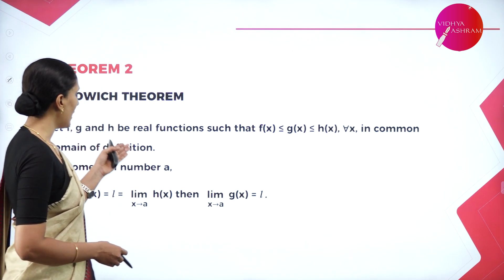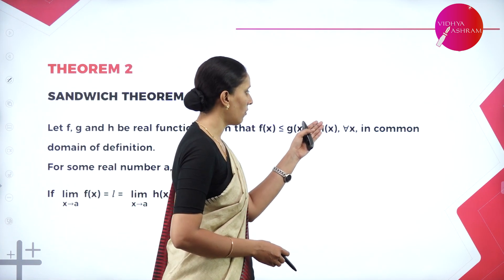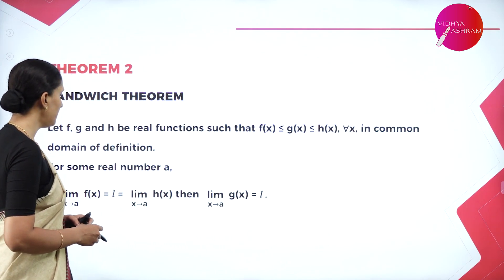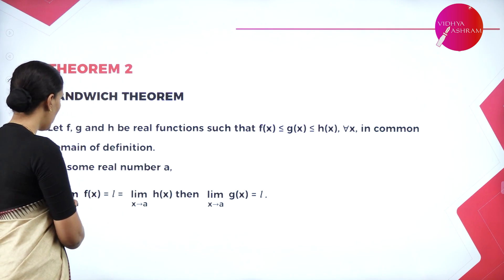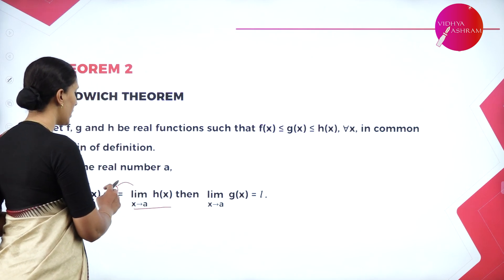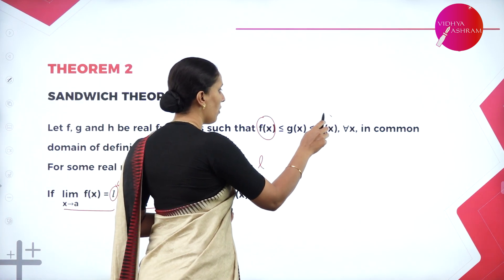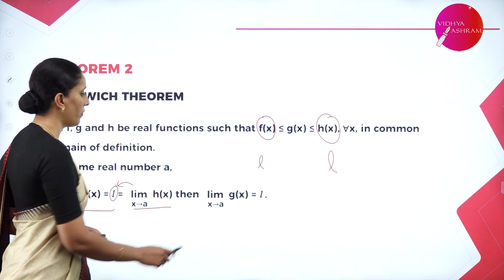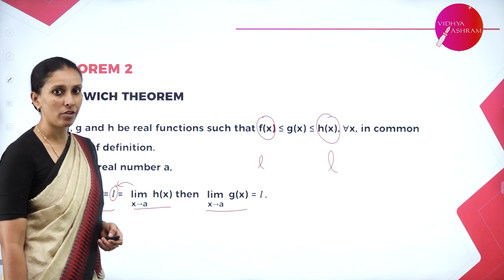Let F, G, and H be real functions such that F of X is less than or equal to G of X, which is less than or equal to H of X for all X — that means the domain of all three functions is common. Now if limit of F of X equals L and limit of H of X also equals L, then limit of G of X as X approaches A is also L. This is the sandwich theorem.